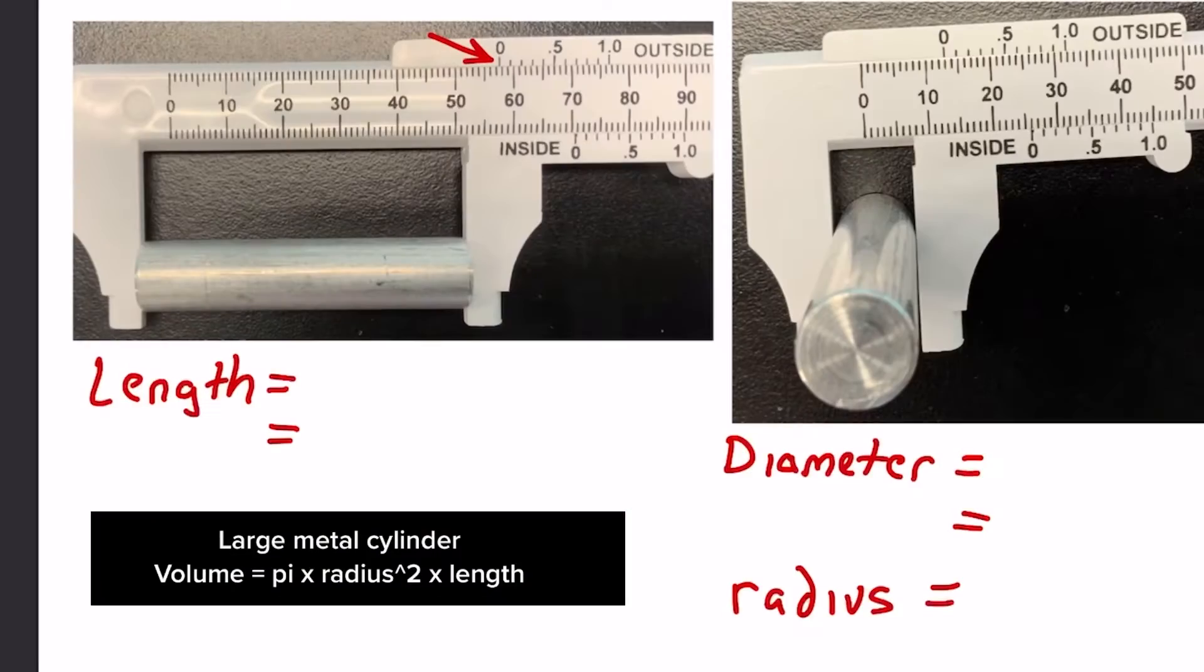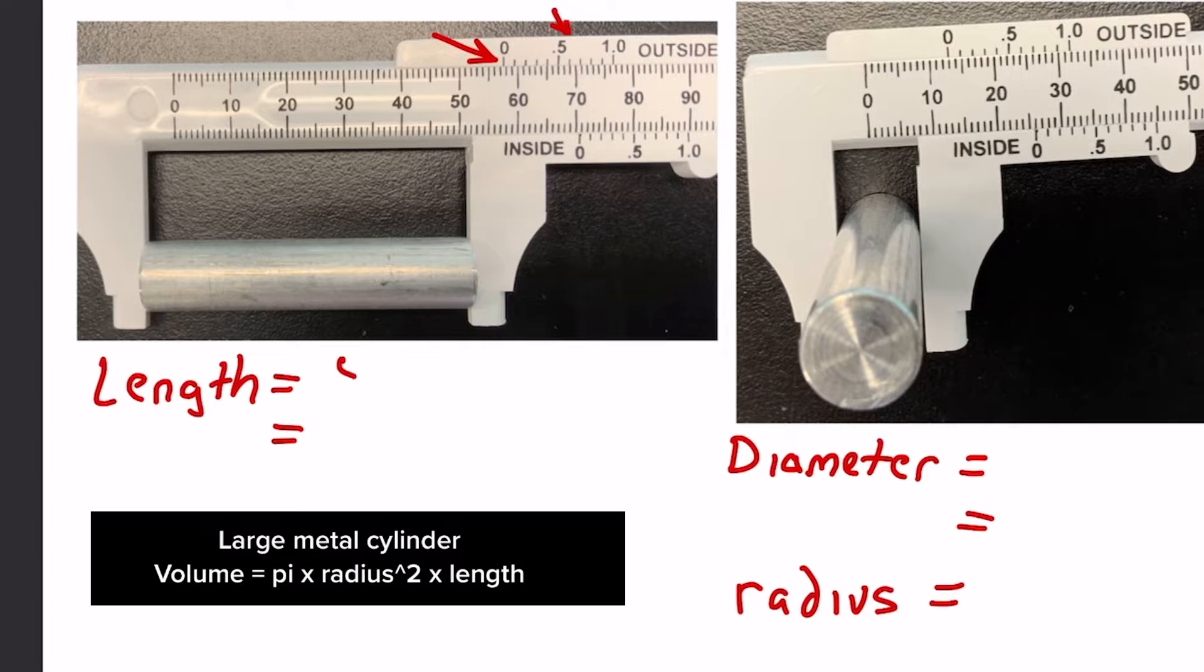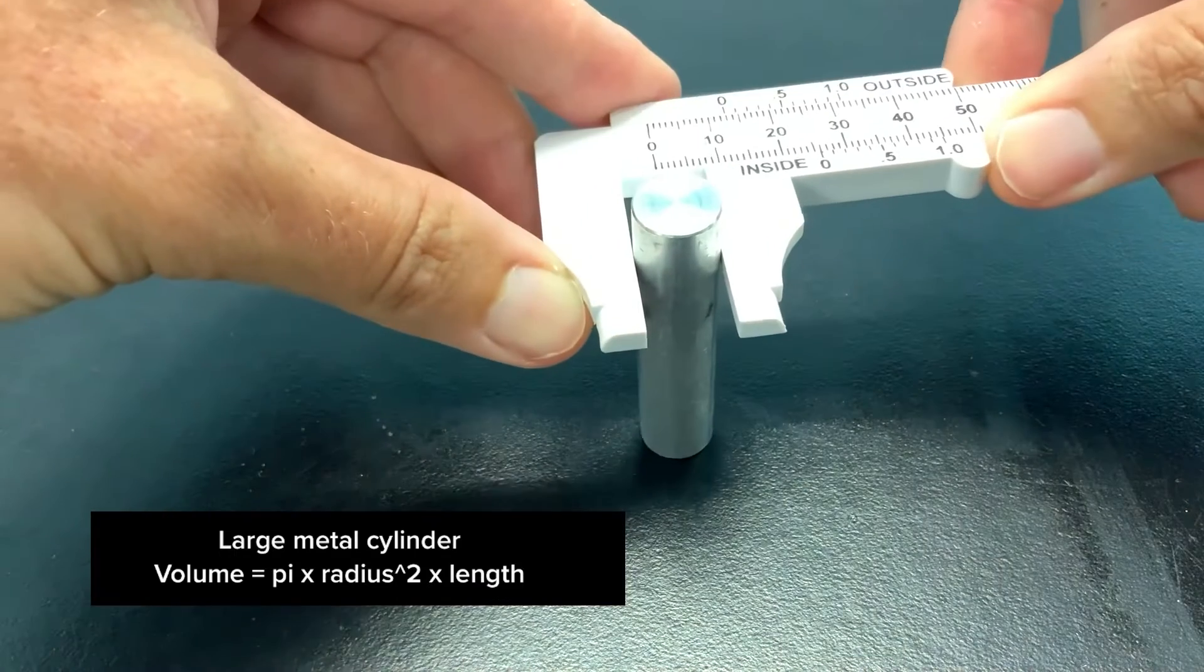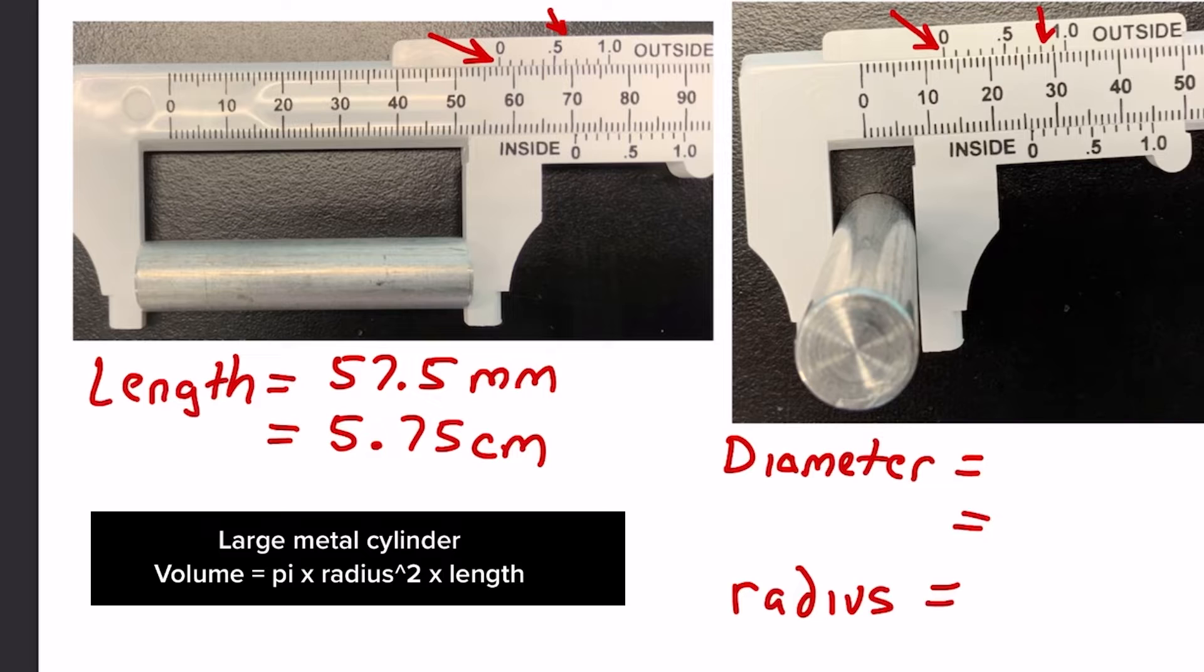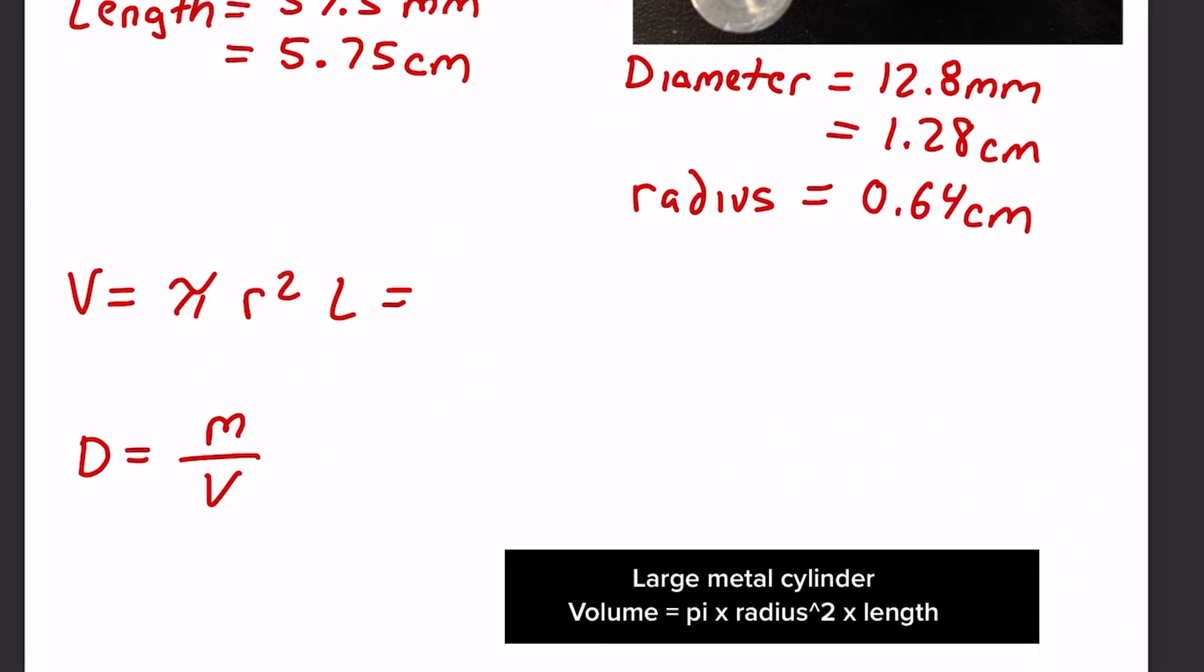Then I'm going to measure the length and the diameter of this metal cylinder. Cutting the diameter in half will give me the radius, because to determine the volume of this metal cylinder, it's pi r squared times the length.